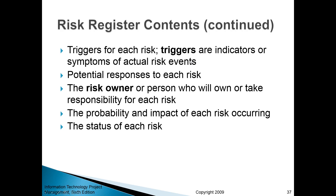Also included are triggers for each risk. Triggers are causes, indicators, or symptoms of actual risk events. Sometimes a risk itself can be too fuzzy or subjective — for example, 'lack of employee cooperation' — but a trigger can be more specific and measurable, such as no meeting scheduled for the duration of one month, which could indicate poor cooperation from users or employees on a particular project. An important part of a risk register is potential responses to each risk, as well as risk owners — people who are ultimately responsible for addressing the identified risk. You may also include the probability and impact of each risk occurring, and the status of each risk: has it occurred, is it being dealt with, has it been properly addressed?